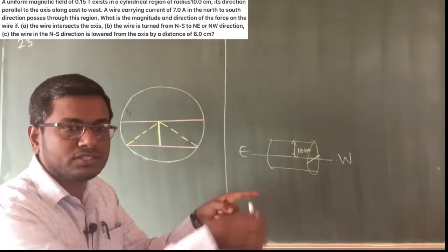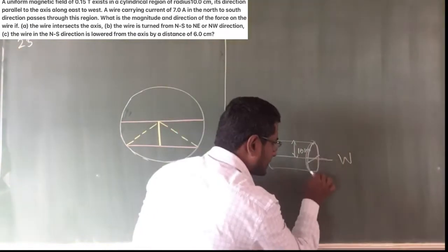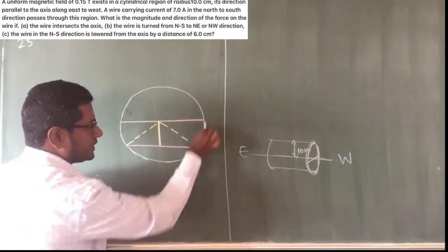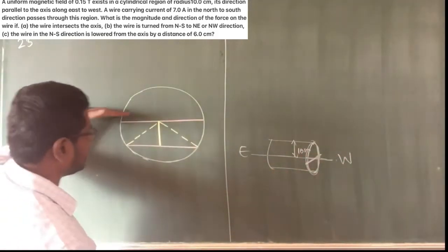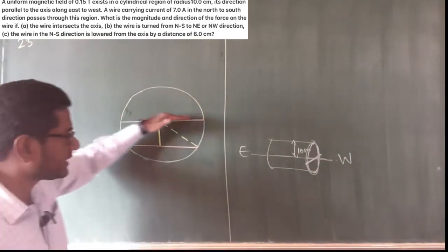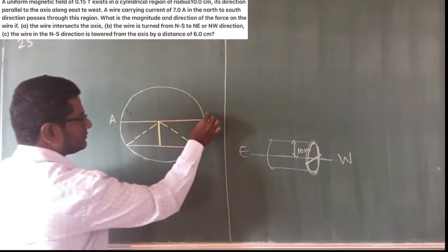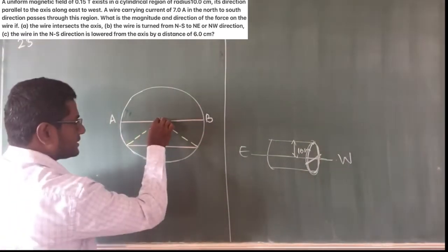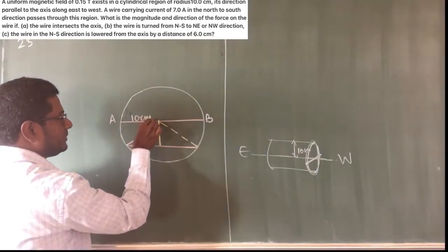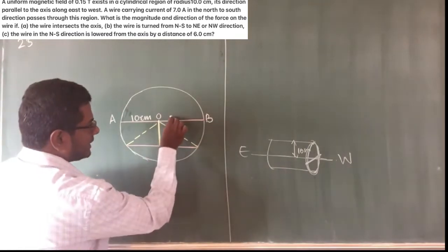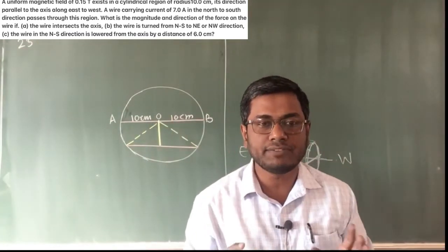The wire is going from north to south and is carrying a current of 7 Ampere. Looking at the circular face of the cylindrical region, the wire cuts through that circle horizontally. This red-colored line is the wire. The cylinder has a radius of 10 cm — let's say the center is O, with 10 cm on each side. This is just the region where the magnetic field exists.